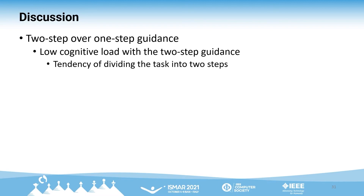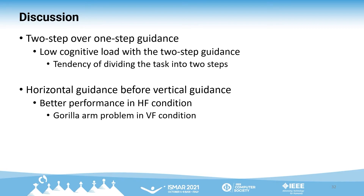The findings show that our two-step guidance is faster with shorter travel distance than one-step guidance, although it is based on the shortest Cartesian distance, which is longer than the Euclidean distance used in one-step guidance. We also observed the tendency of dividing the task into two steps even under one-step guidance, likely due to reduced cognitive load since participants could focus on one direction at a time. HF condition showed better performance than VF condition in travel distance and subjective evaluation, especially in fatigue and satisfaction. This could be due to the gorilla arm problem, as finding horizontal direction while lifting one's arm to target height in VF condition is physically more difficult. Thus, we recommend giving two-step guidance in horizontal direction first for informing the target's 3D position.